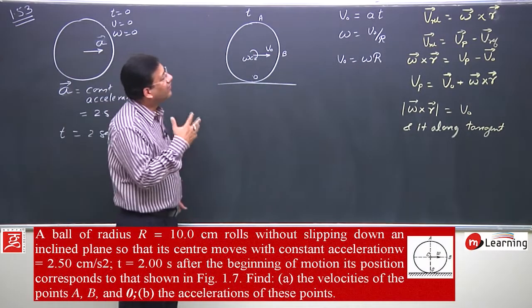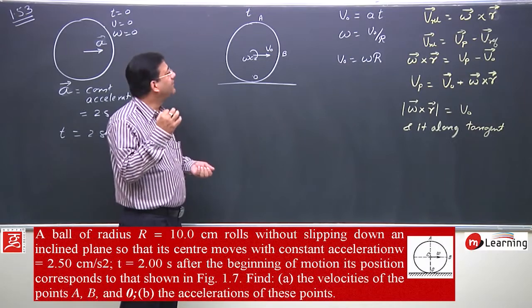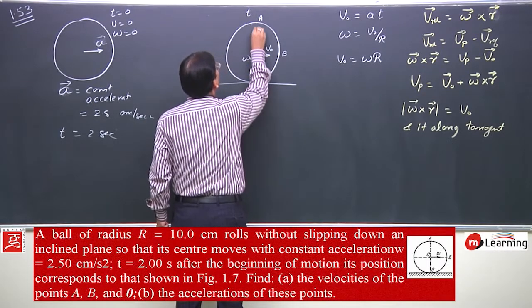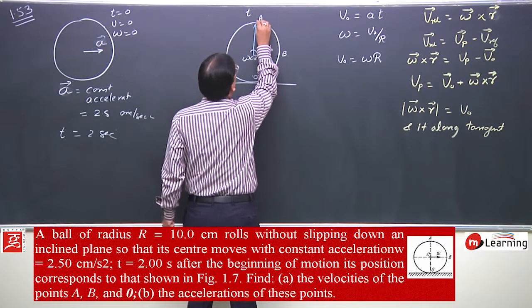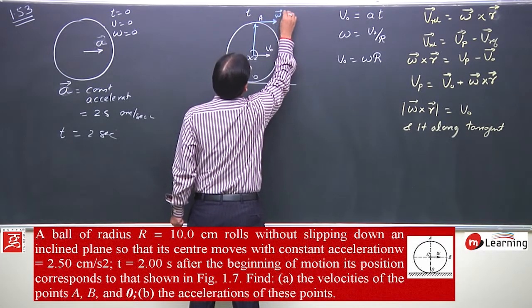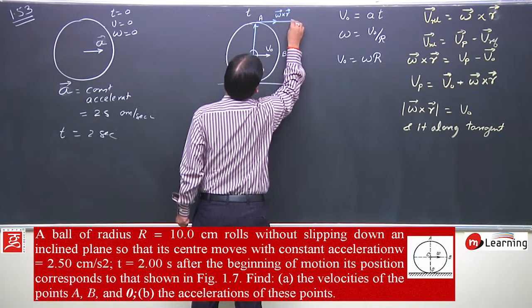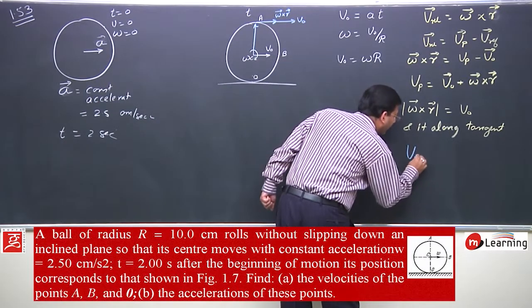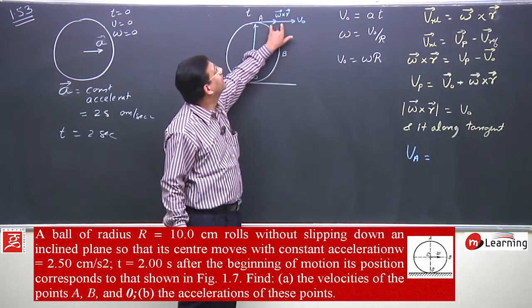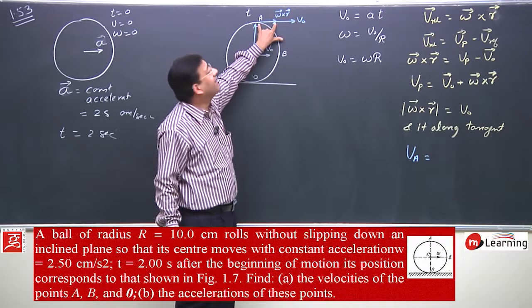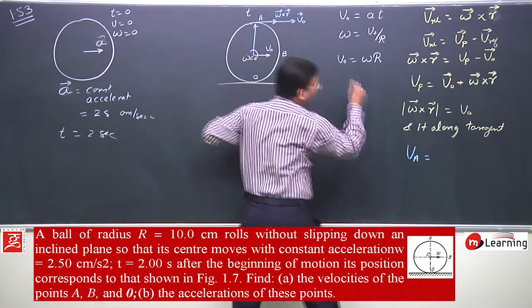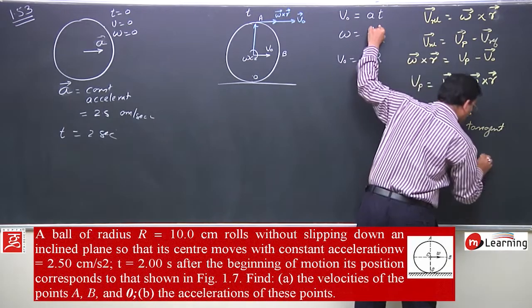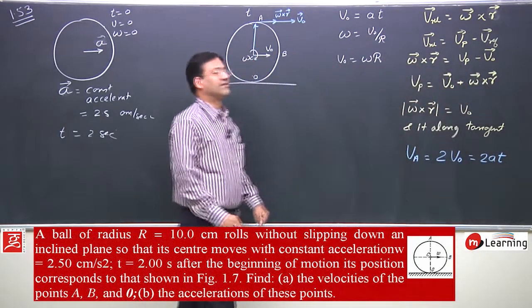Now, based on all this, I will write velocity of point A. Point A is the topmost point. The velocity of point A: its magnitude is v₀ for the center component, and omega cross r also has magnitude v₀. So I will say velocity of point A is 2v₀. But v₀ equals A·t, so it is 2At. This is the velocity of point A.